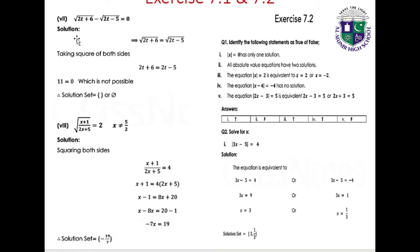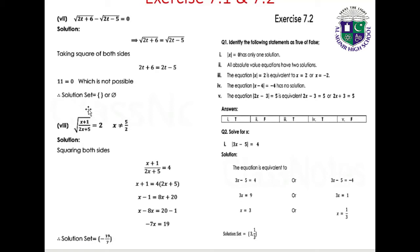Part 7: √(2t plus 6) minus √(2t minus 5) equals 0, so √(2t plus 6) equals √(2t minus 5). Squaring both sides: 2t plus 6 equals 2t minus 5, giving 11 equals 0, which is not possible. Solution set: empty set.